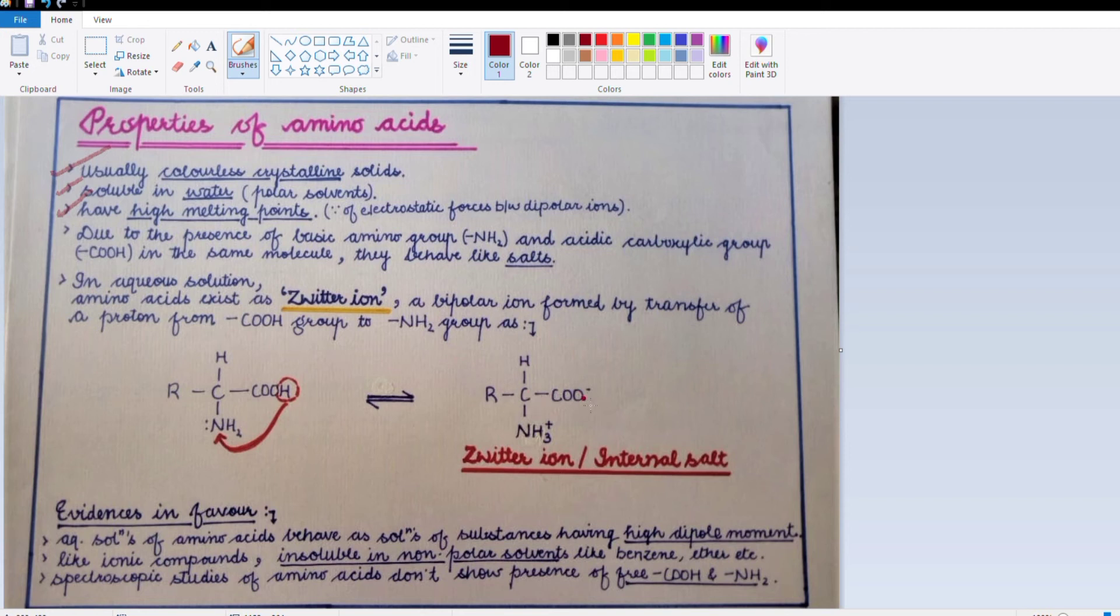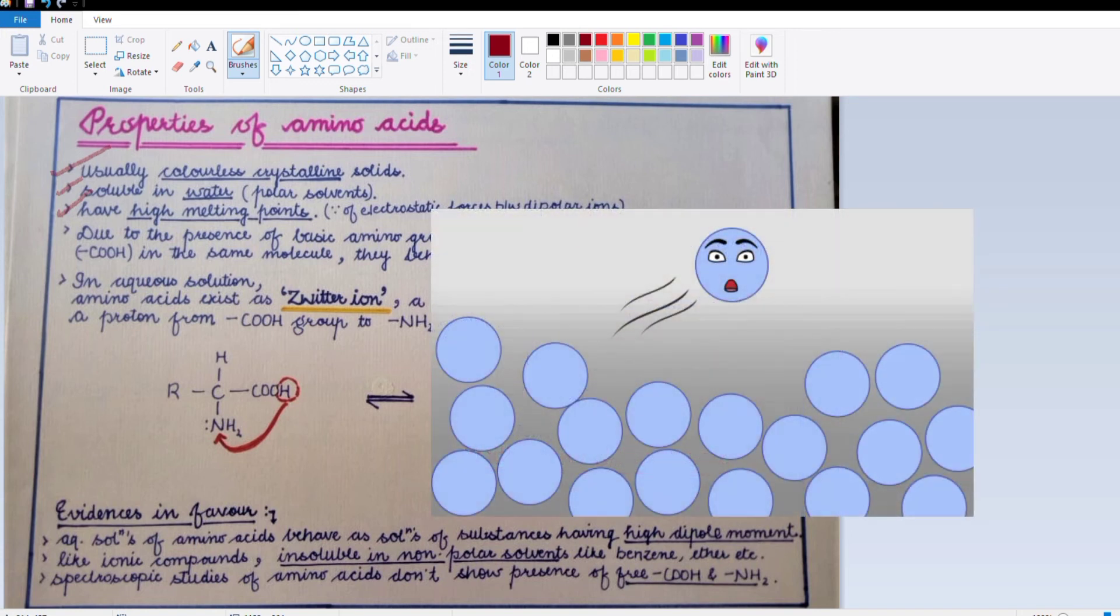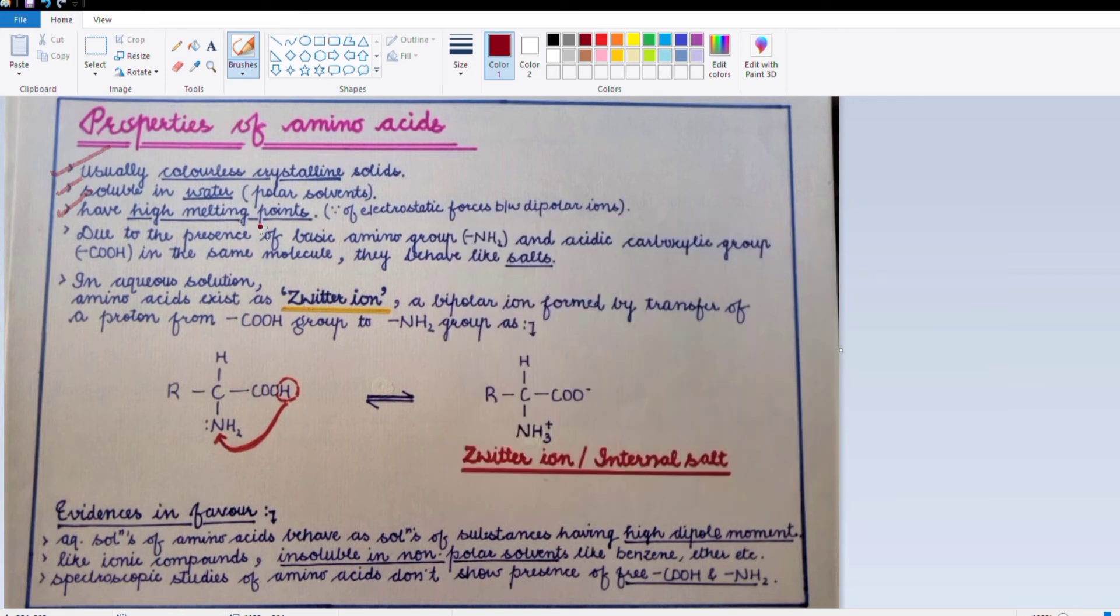Now, bipolar ions exist because electrostatic forces require charges to be present. Like we have studied in ionic compounds, electrostatic forces exist between charged species. If there are many bipolar ion molecules in a compound, they will develop strong electrostatic attractions between them, leading to high melting points. This is the explanation for the high melting points of amino acids.